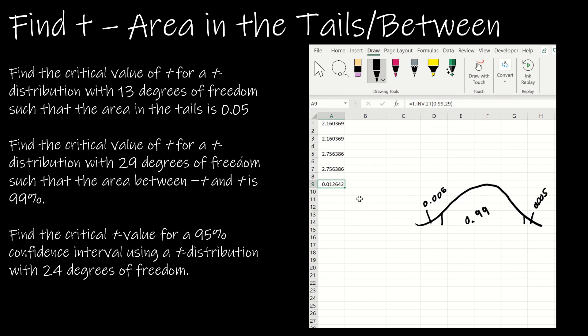Last one: the critical t value for a 95% confidence interval using a t-distribution with 24 degrees of freedom. Just as we did before, if there's 95 in the middle then we've got 5 total on the outside. So this is 2.5 and this is 2.5. It's going to be really similar to what I did up here. So remember up here I did T.INV(0.975), so I'm just going to change this to 24 degrees of freedom. Or T.INV.2T—if there's 95 in the interval there's 5 left on the outside, and again 24 degrees of freedom. So that would be my solution for the last one.